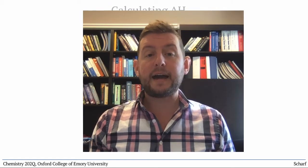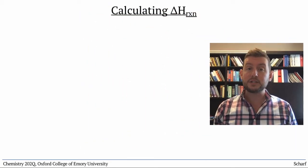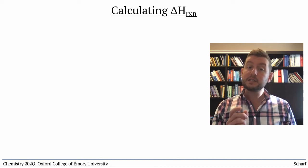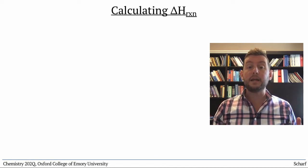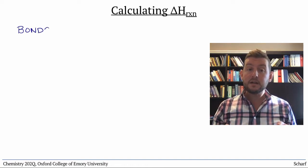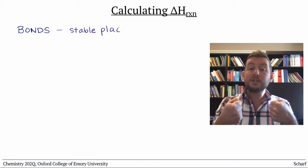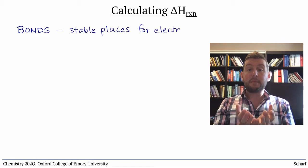We can use this fact to calculate enthalpy changes for chemical reactions if we know specifically which bonds are made and broken. To begin, bonds are relatively stable things. They represent a potential energy minimum for a pair of electrons, a place where they are happy to be.